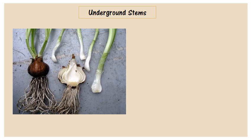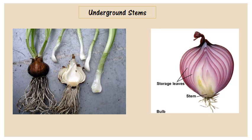The first example of underground stems is called bulbs. What are bulbs? They are underground stems that store food in their leaves. One example of a bulb is onion — it's an example of bulbs, where they grow their stems under the ground.